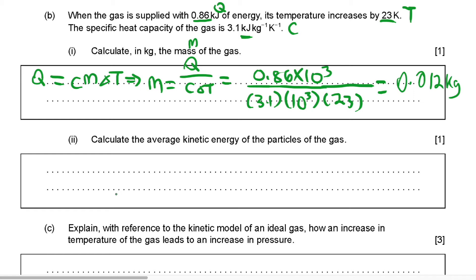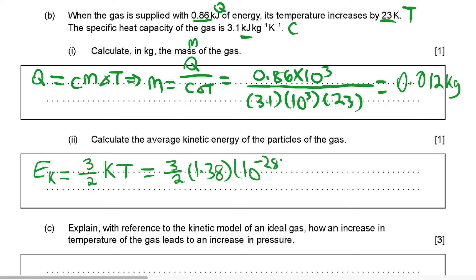Now it asks us to find the average kinetic energy of the particles of the gas. The average kinetic energy formula is equal to 3 over 2 multiplied by the Boltzmann constant k multiplied by temperature T. This is equal to 3/2 multiplied by 1.38 multiplied by 10 to the power of negative 23, multiplied by temperature, which is equal to 313 kelvin. This gives us an answer of 6.5 multiplied by 10 to the negative 21st power joules.